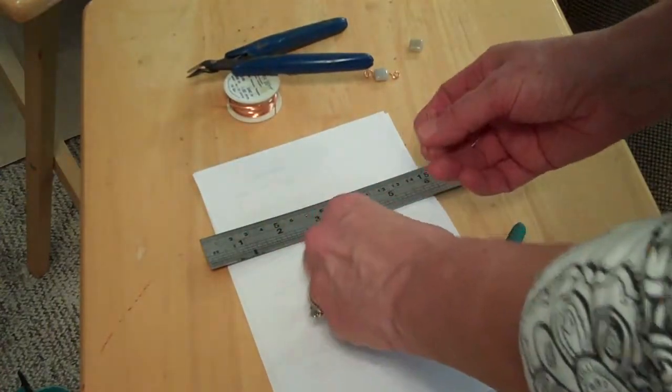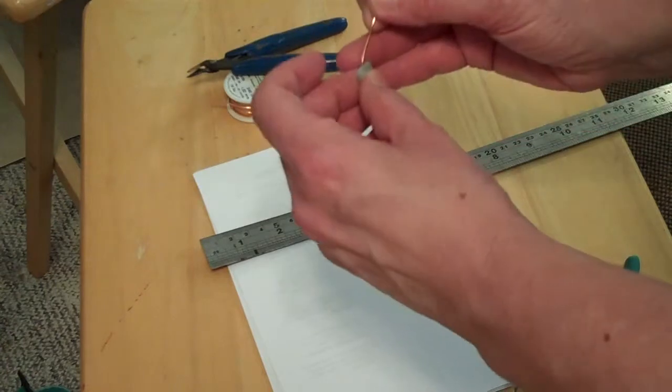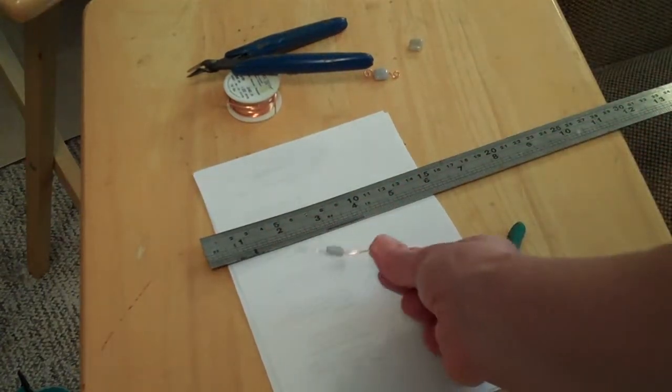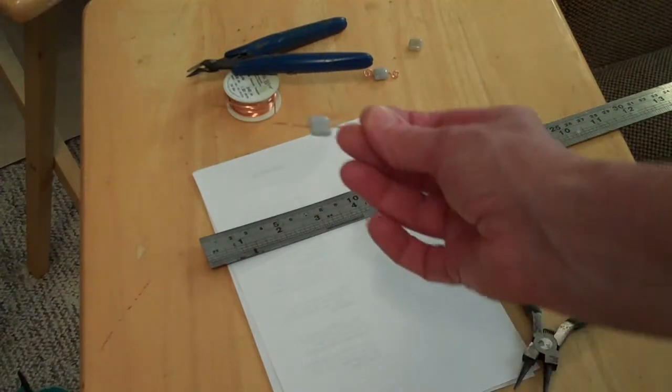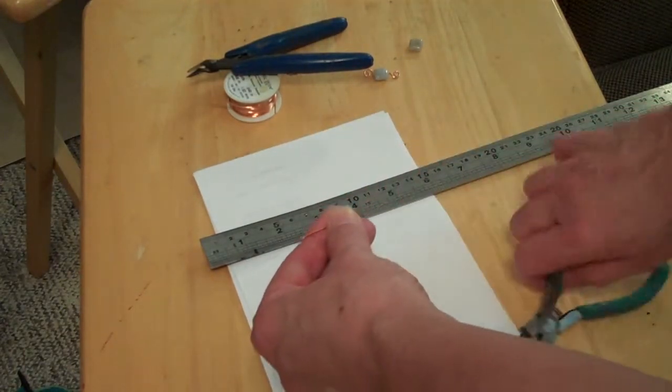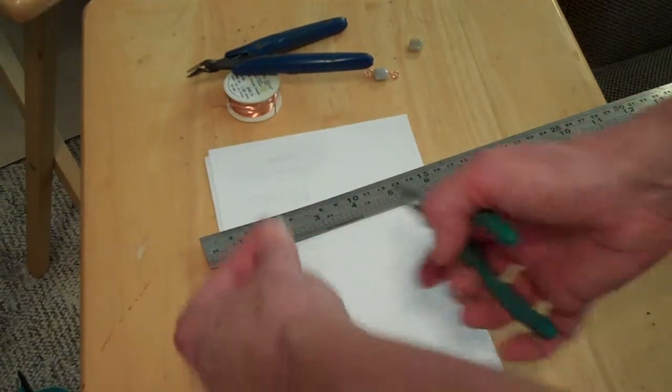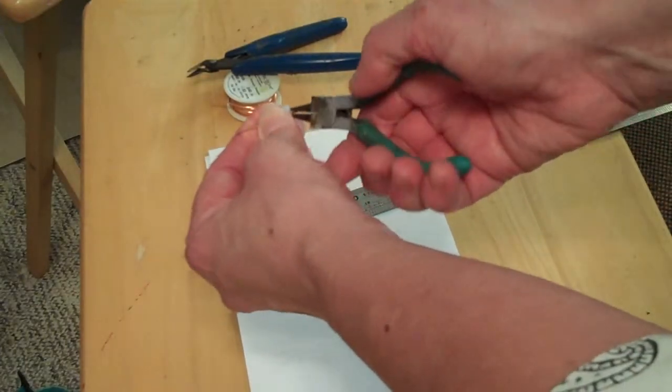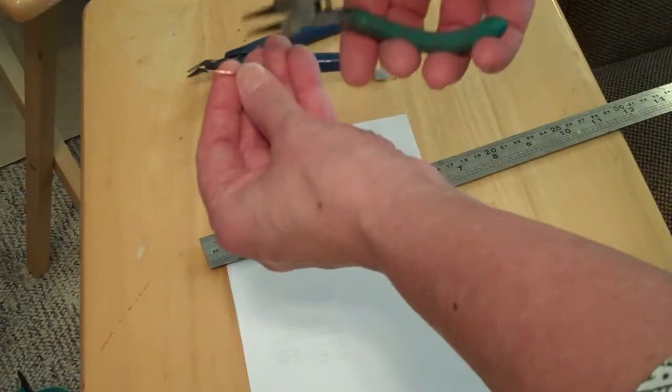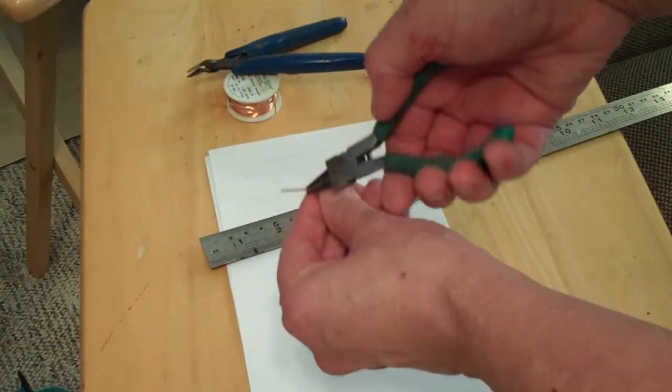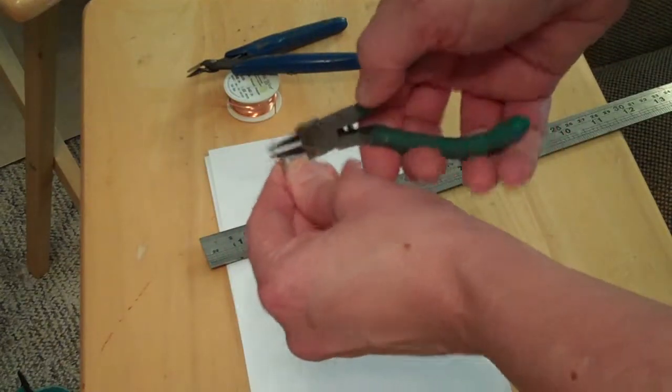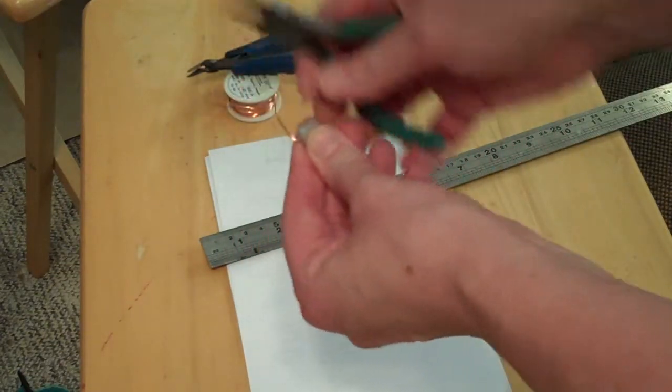And then all I've got to do is feed it through the hole. About halfway through, you can see I've got it centered. And I just want to take my round nose pliers and bend one end to the right going down, and one end to the right going up.